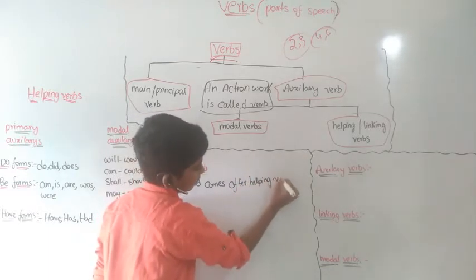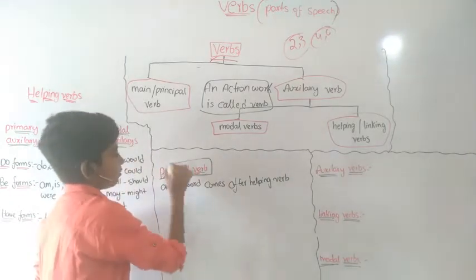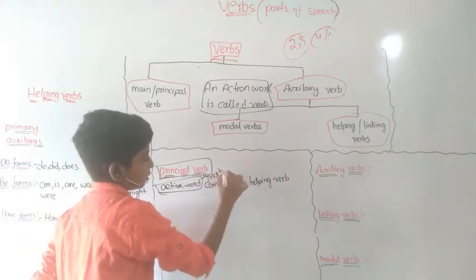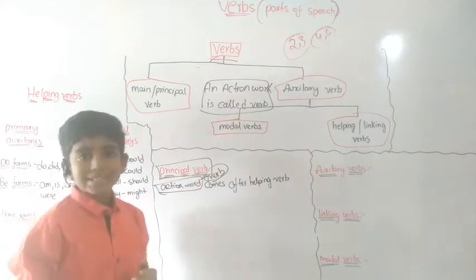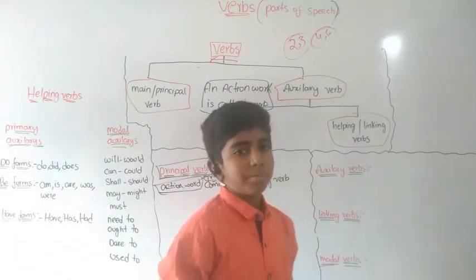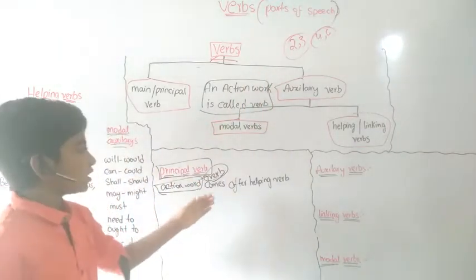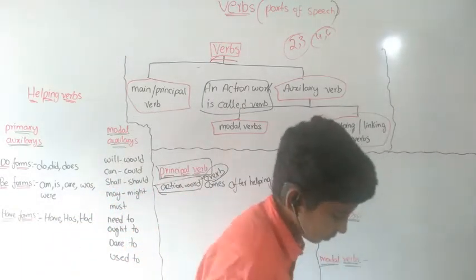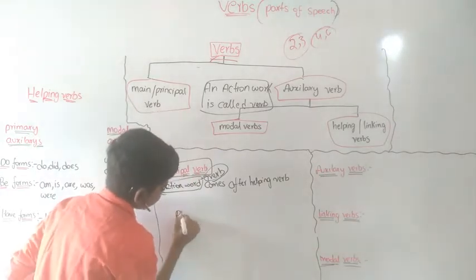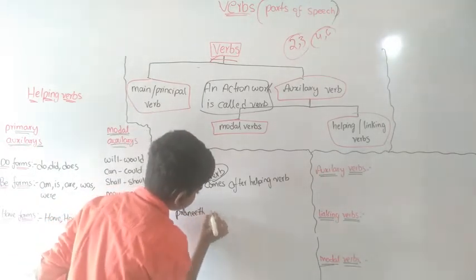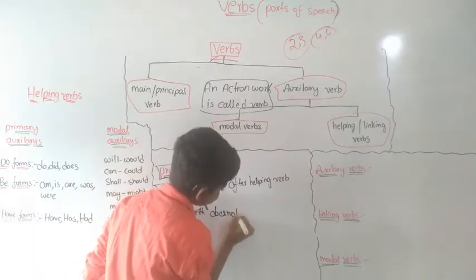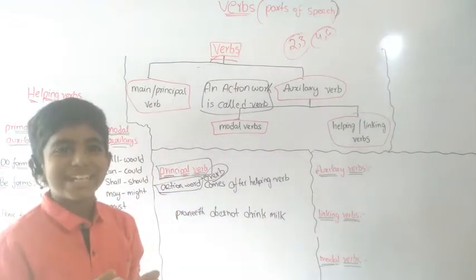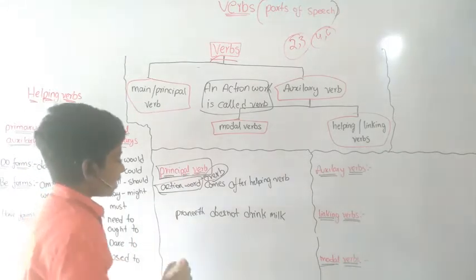The verb that comes after the helping verb is called principal verb. An action word is nothing but a verb. A verb or action word that comes after the helping verb — helping verb being a part of auxiliary verb — is called principal verb. For example, suppose we take the sentence: Praneeth does not drink milk.